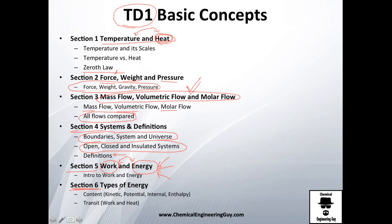We finish with section six, the last section, covering the types of energies. You've probably seen before: kinetic energy, potential energy, internal energy, and enthalpy. Internal energy is for closed systems and enthalpy is for open systems. We'll also cover the transit types of energies, which are work and heat. As you can see, we're going to be reviewing the concepts of work, heat, and energy a lot. That's our overview of the TD-1 block — see you in the next video!